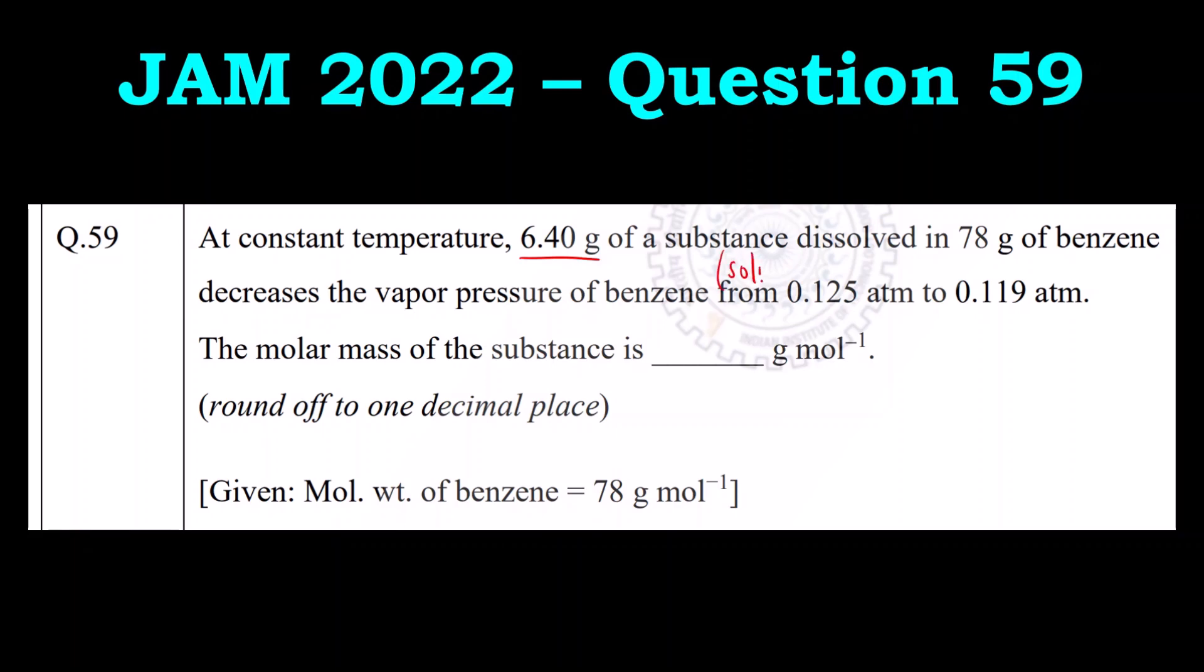The substance here is the solute, mass of solute is given. It is dissolved in 78 grams of benzene. Benzene is the solvent. The vapor pressure of benzene decreases from 0.125 atmosphere to 0.119 atmosphere.